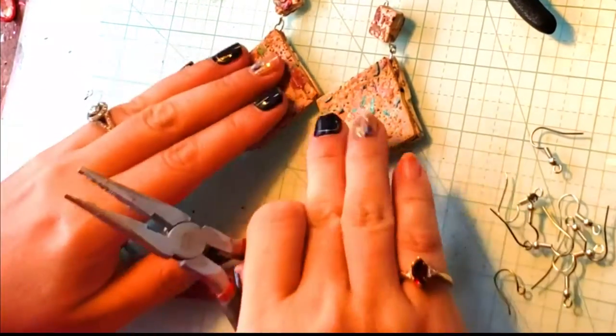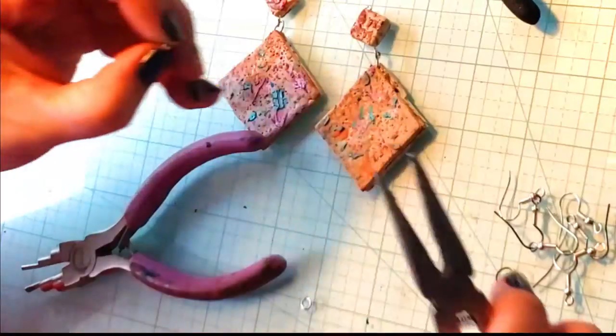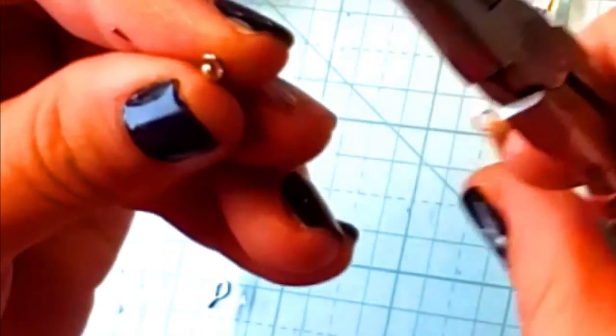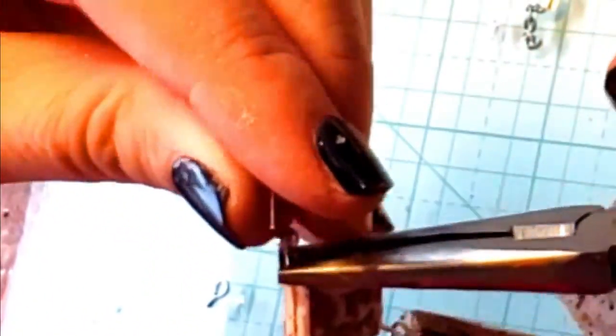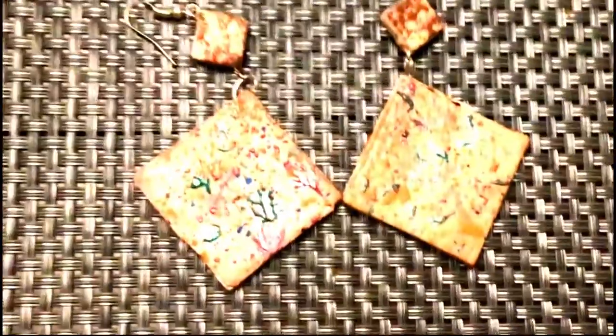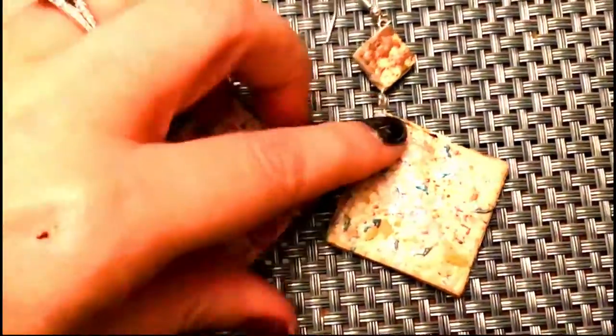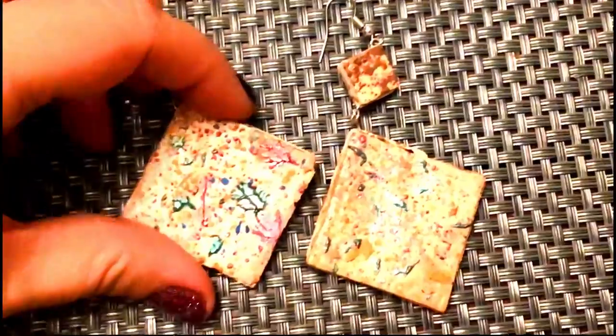Then I baked them and after taking them out of the oven, opened up the loop on an ear wire and hooked them on. I repeat the exact same process with the blue, using different shape cutters, bake them, loop them on with my ear wire.